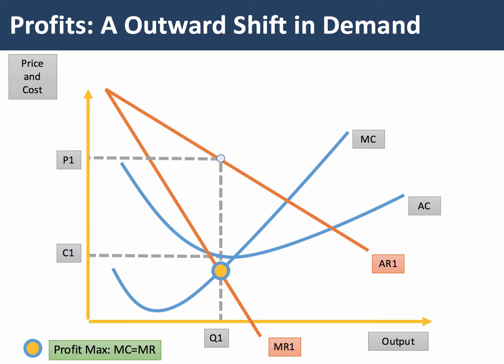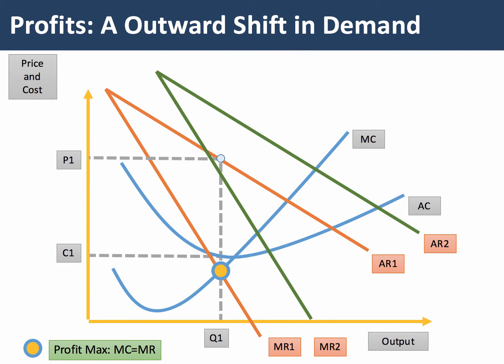So what happens if there's an outward shift in conditions of demand? For example, there might have been an increase in the price of a substitute product, or perhaps a rise in the real income of consumers. Well, if there's a shift in demand, the average revenue curve shifts from AR1 to AR2, and marginal revenue also shifts as well.